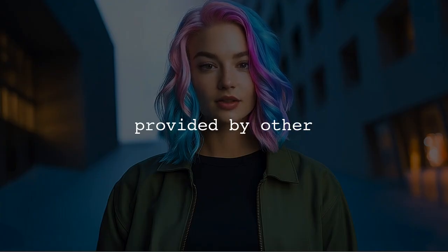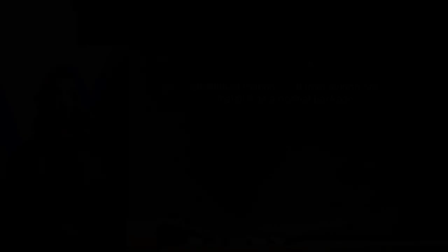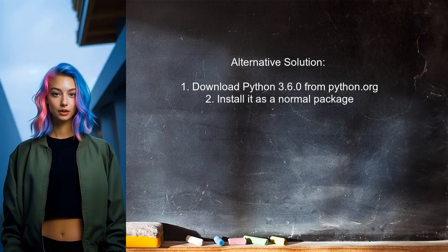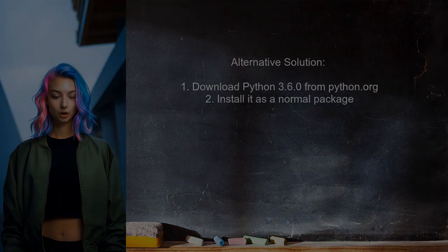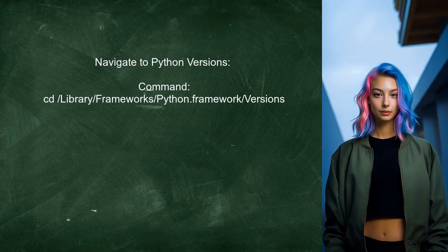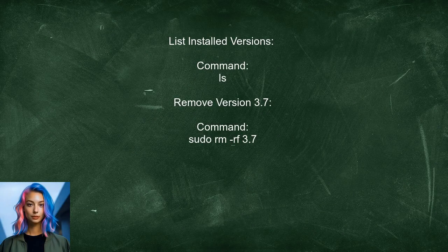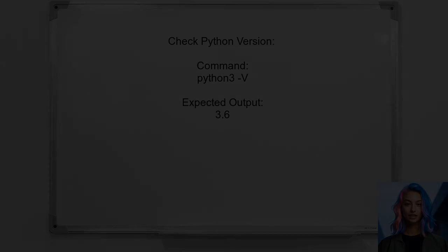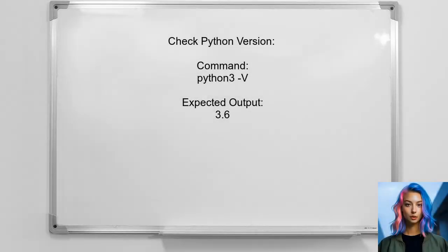An alternative approach involves downloading Python version 3.6.0 from the official Python website and installing it as a normal package. Next, navigate to the Python framework directory using the command line: type 'cd /Library/Frameworks/Python.framework/Versions' to access the installed versions. List them with the 'ls' command. To remove version 3.7, use 'sudo rm -rf 3.7'. Finally, check the current Python version by running 'python3 -v' — it should now display version 3.6.